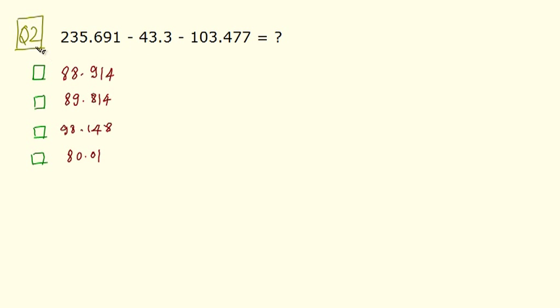Now let's move on to question number 2. To make things simpler, let us modify the expression. We can write this expression as 235.691 minus, then we have 43.3. We are actually taking the minus out of these two terms. So minus 43.3, so minus becomes plus 103.477. Now we will first add these two terms and then subtract it from this term.